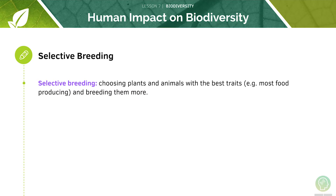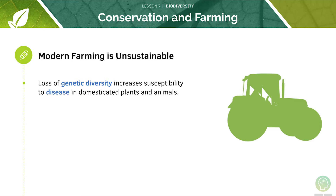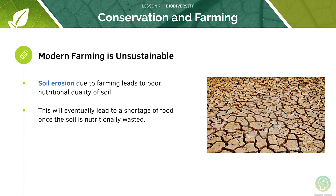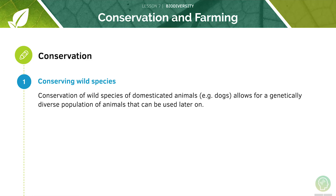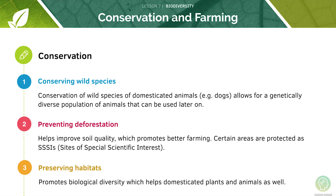Selective breeding involves choosing plants and animals with the best traits and breeding them more, which leads to less genetic diversity in farm animals and an overall loss in biodiversity. It's important to understand that modern farming is unsustainable — soil erosion due to farming leads to poor nutritional quality of the soil, eventually leading to food shortages. Conservation of wild species and domesticated animals allows for a genetically diverse population that can be used later on, and preventing deforestation will help improve soil quality and promote better farming. Land and habitat preservation promotes biological diversity which ultimately helps domesticated plants and animals as well.